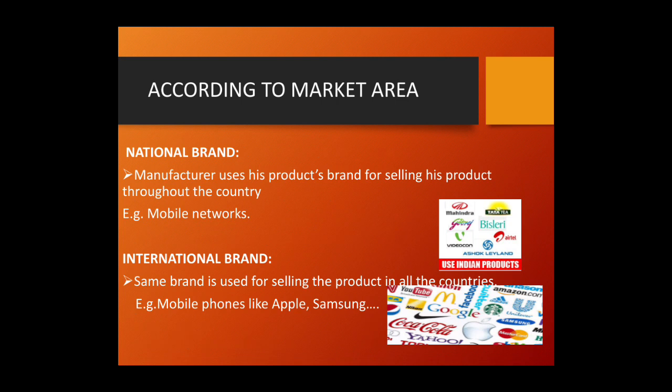National brand: the manufacturer uses his product's brand for selling throughout the country. It includes homogenous Indian brands like Godrej and Airtel. When you talk about international brand, the same brand name is used for selling the product in all countries. Examples include mobile phones like Apple and Samsung, along with plenty of other businesses and brands seen across countries.